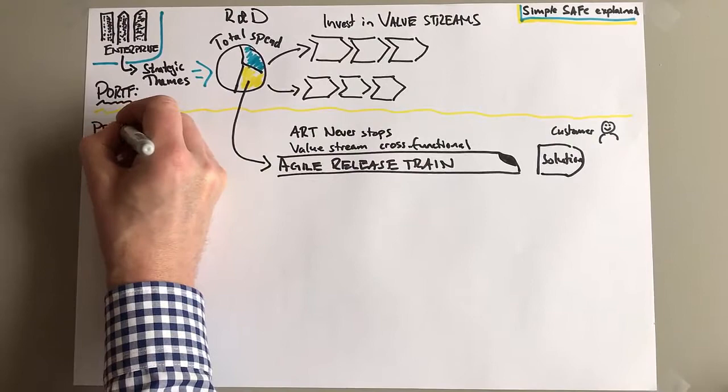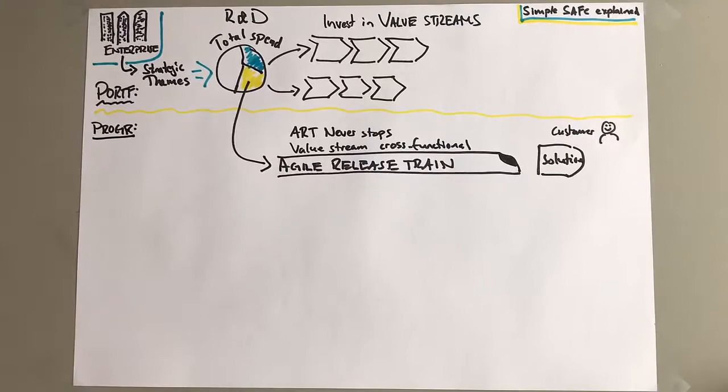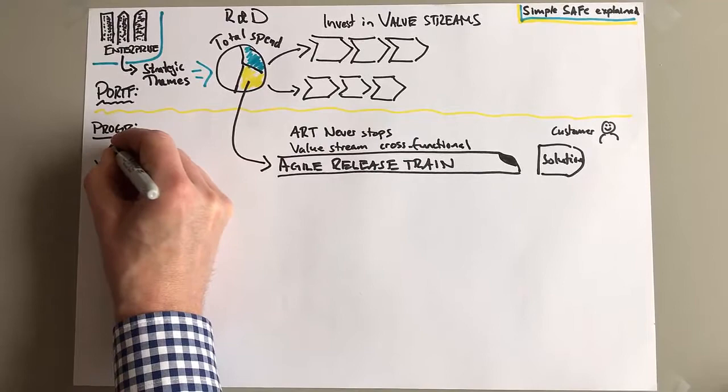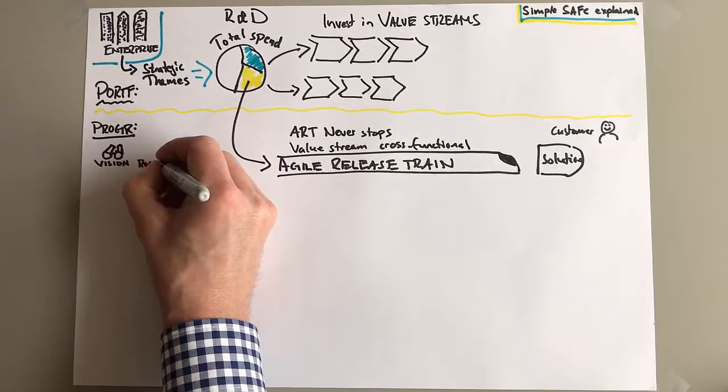And the thing about the Agile Release Train or the ART is that it never stops. It's not a project that is temporary. It never stops. Well, it stops of course the day you say 'We're not going to have this solution anymore, we're not going to have this product on the market.' But until then, it's ongoing, not temporary.